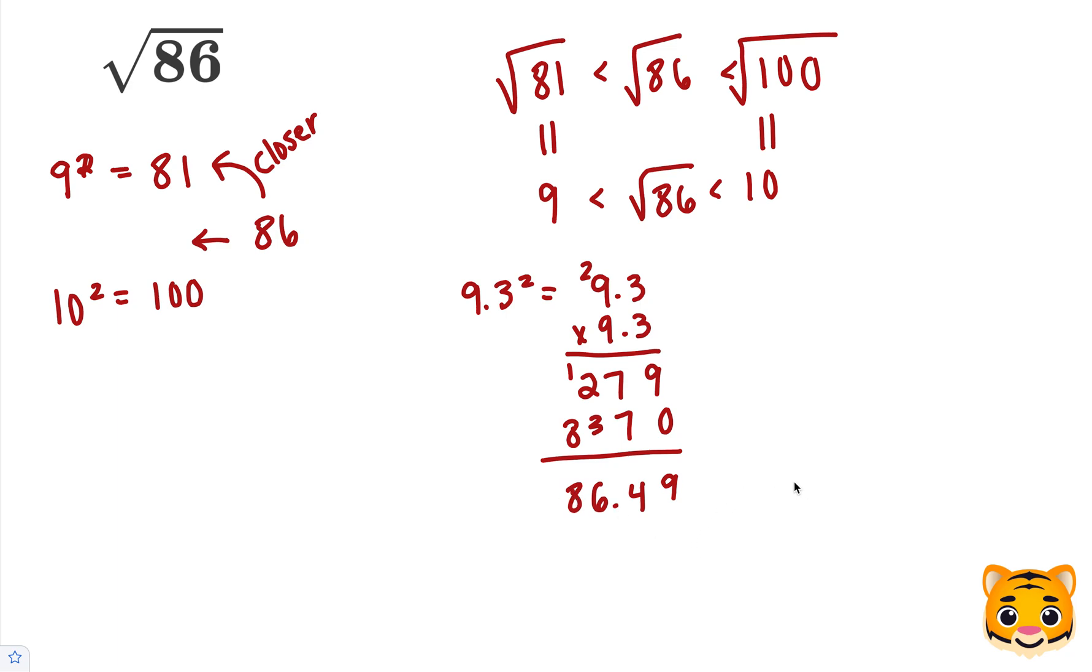So we have 86.49, which is very close to 86, and we can approximate it in that way. So now we can say that 9.3 squared is approximately 86.